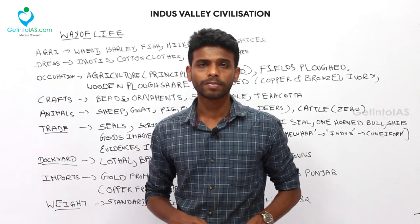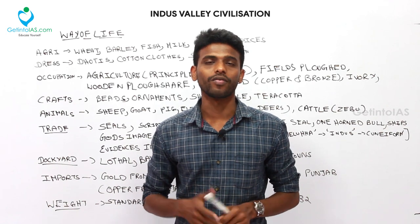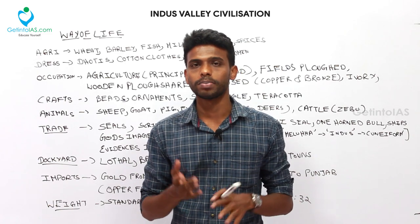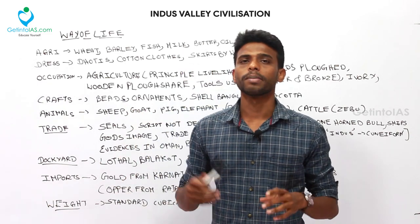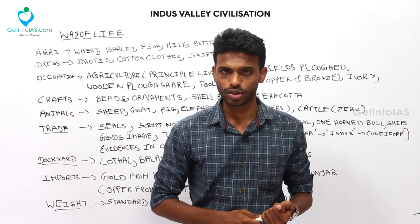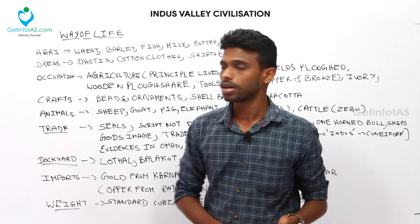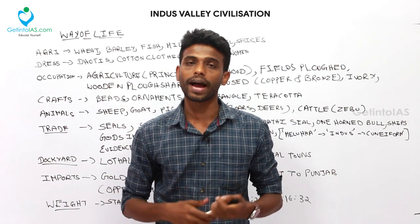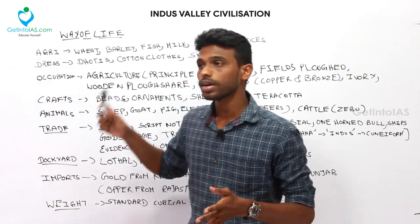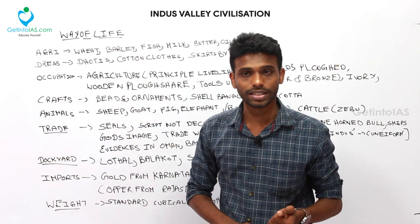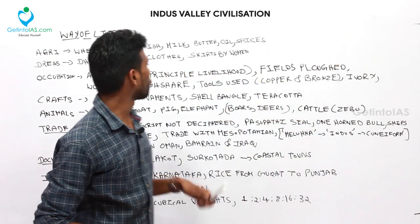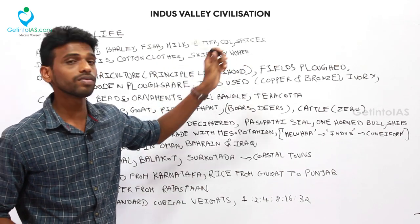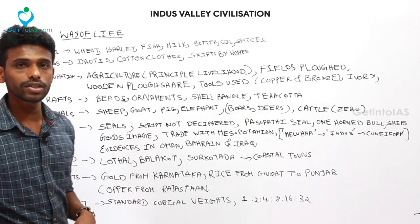Now moving on to the way of life of the Indus Valley people. Agriculture was the main occupation. The principal staple crop was wheat, as northwestern India is highly dependent on wheat even today — this started in the Indus Valley era. Other crops included barley, and fish, milk, and butter were consumed. Millets were cultivated; oil and spices were also discovered.